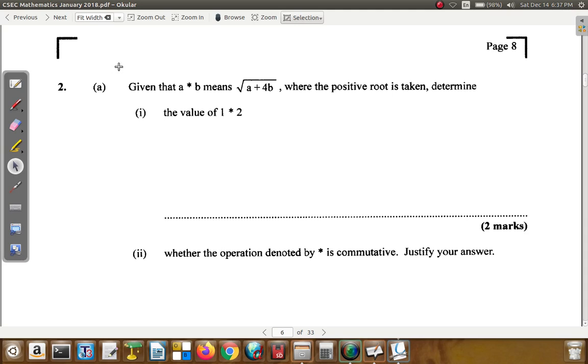Alright, let's look at this. First of all, what you have, A star B means the square root of A plus 4B. What is 1 star 2? Now, A is first and A is in this position. So, what you're going to do is put 1 here.